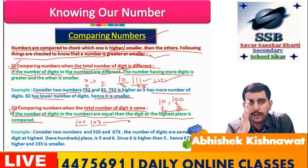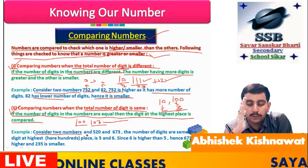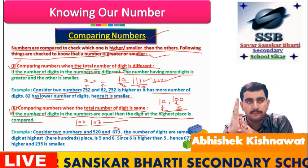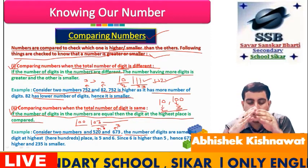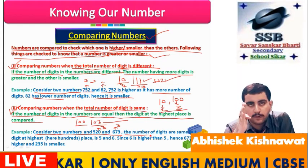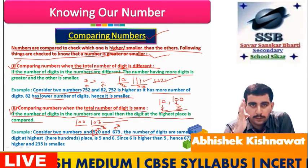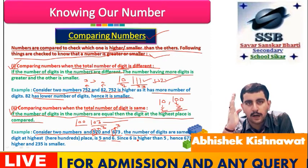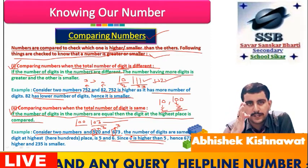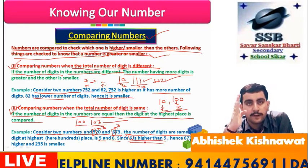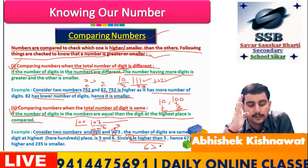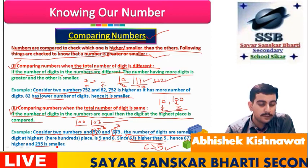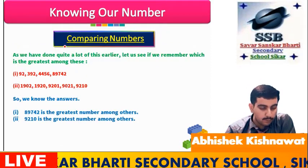Now the second case: comparing numbers when the total number of digits is the same. For example, 100 and 115 — both are 3-digit numbers. Consider 520 and 673 — both are also 3-digit numbers. When the digit count is the same, we go to the highest place value, which here is the hundreds place. In 520 it is 5, and in 673 it is 6. Since 6 is greater than 5, we conclude that 673 is greater and 520 is smaller.